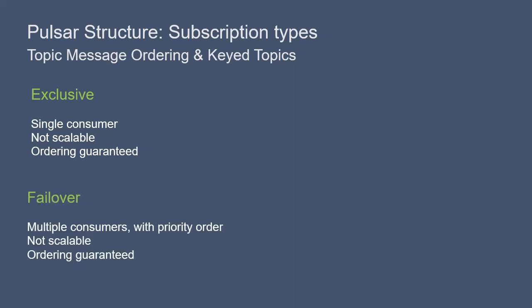With a Failover subscription, multiple consumers can attach to the subscription. The consumers will have priority, and when the master consumer disconnects, the next consumer in line can receive messages. Like the Exclusive subscription, with Failover, ordering is guaranteed, but it's not very scalable.